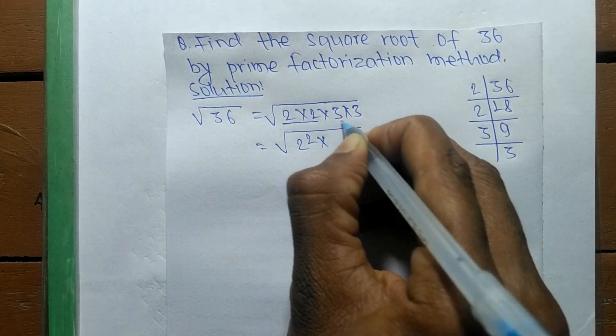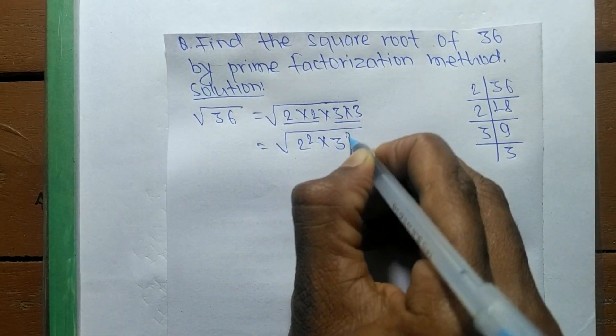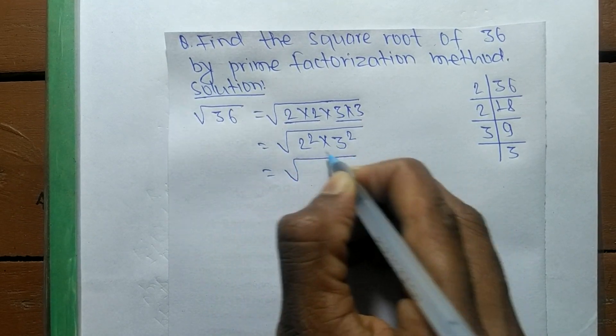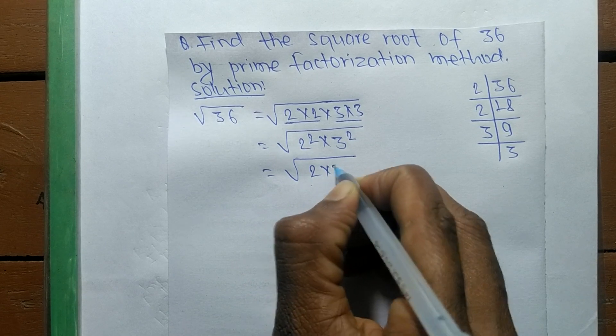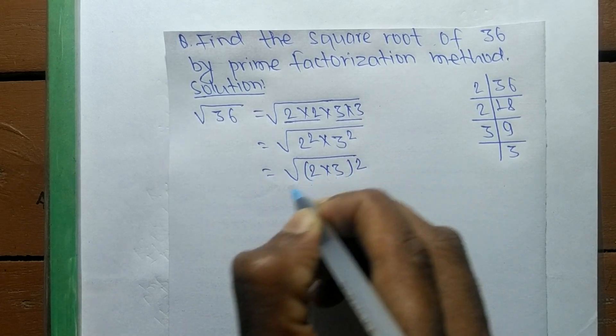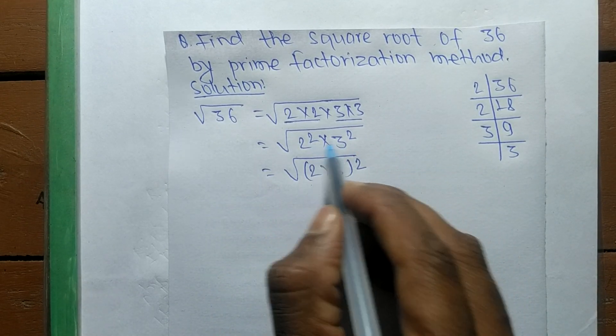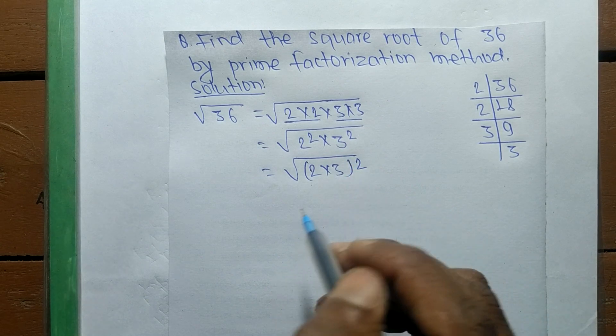So 2 into 2 is 2 squared, and 3 into 3 is 3 squared. Since squared is present in both, we make it 2 into 3 whole squared. We took the square as a common from both.